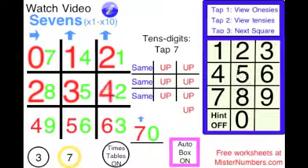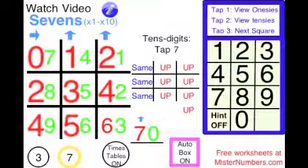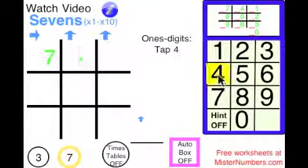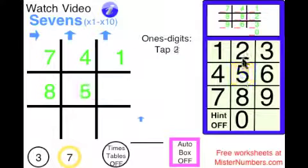You can also look at the tens digit pattern. You have the choice to turn the auto box off and go left to right with the ones digits.